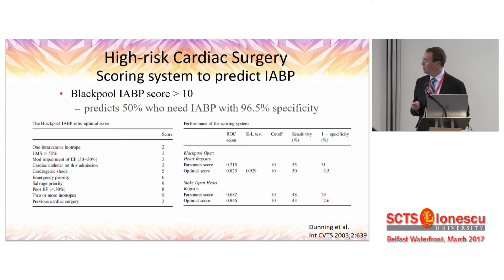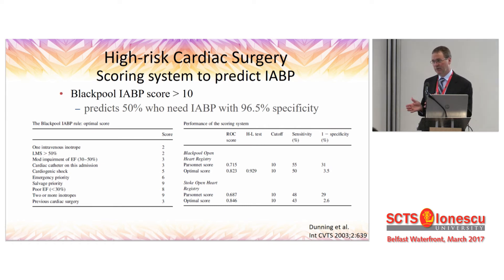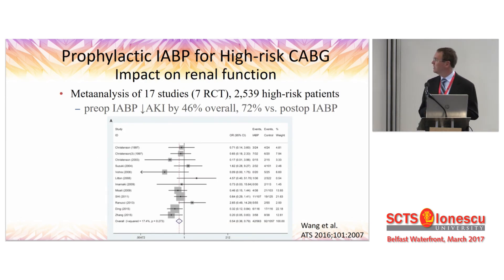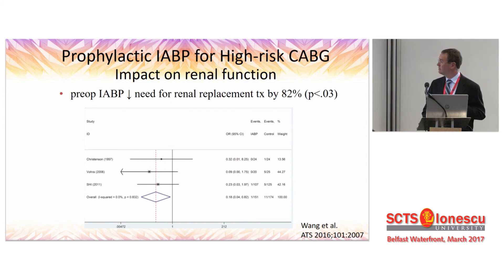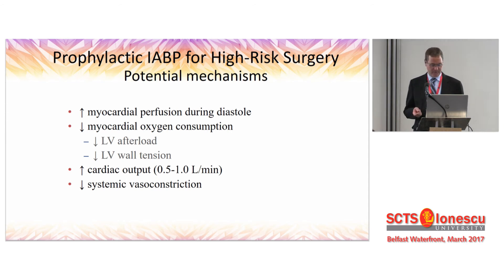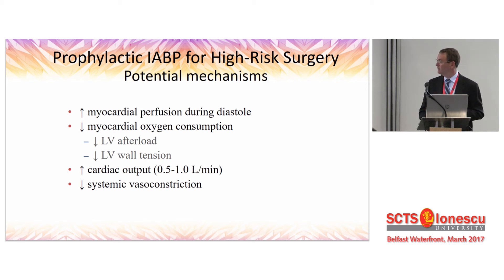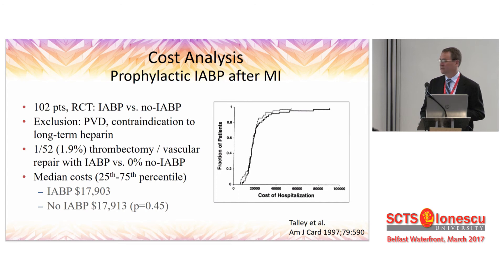Looking at the Blackpool balloon pump score, using that scoring system you can identify the great majority of patients who are going to need a balloon pump postoperatively, and this can also be applied preoperatively to identify who you may want to prophylactically treat. A meta-analysis of 2,000 high-risk patients showed the balloon pump not only increased cardiac output but also decreased the incidence of acute kidney injury and the need for renal replacement therapy by 82%. In summary, the balloon pump works by increasing myocardial perfusion during diastole, decreasing myocardial oxygen consumption, increasing cardiac output, and decreasing systemic vasoconstriction.